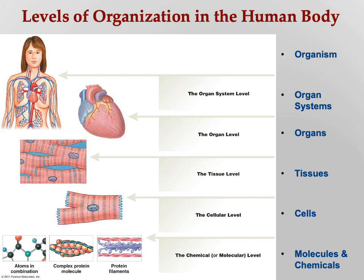This might seem like a throwaway slide, but it's more important than you think. One of the things that trips people up in this class is that we constantly have to move back and forth between levels — I'll be talking about brain tissue at one point, then a neuron immediately afterward, then ions. This is why you took Bio 156 ahead of time, so you'd be familiar with the background and we can jump back and forth as needed between all these different levels.